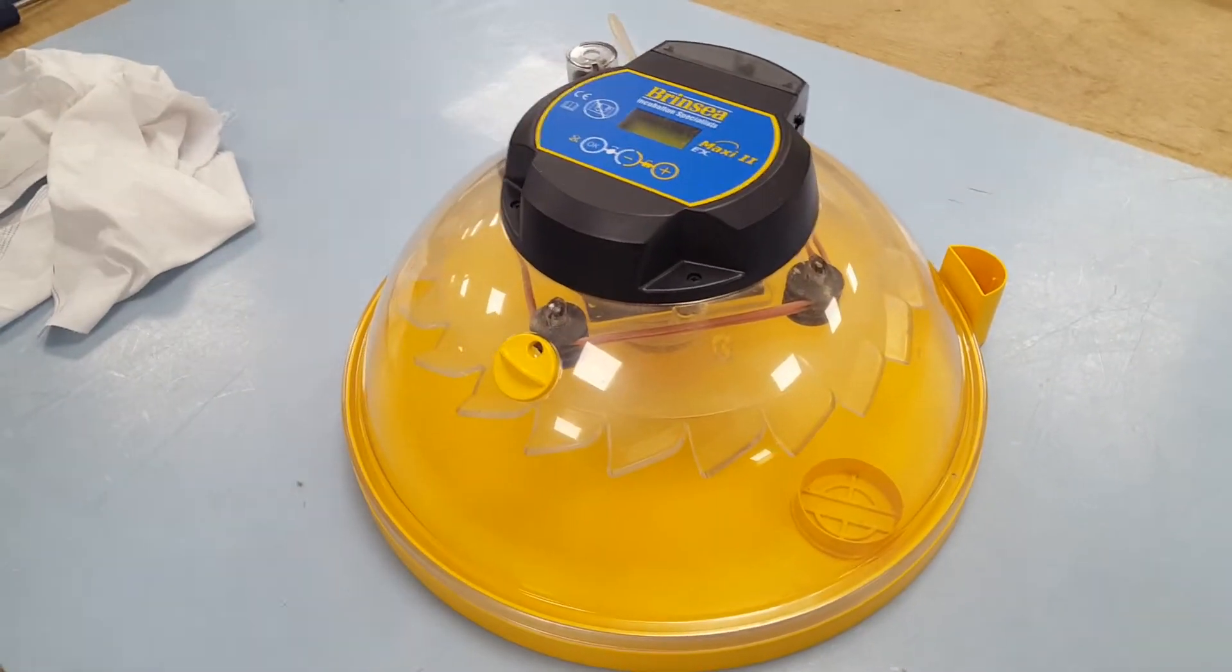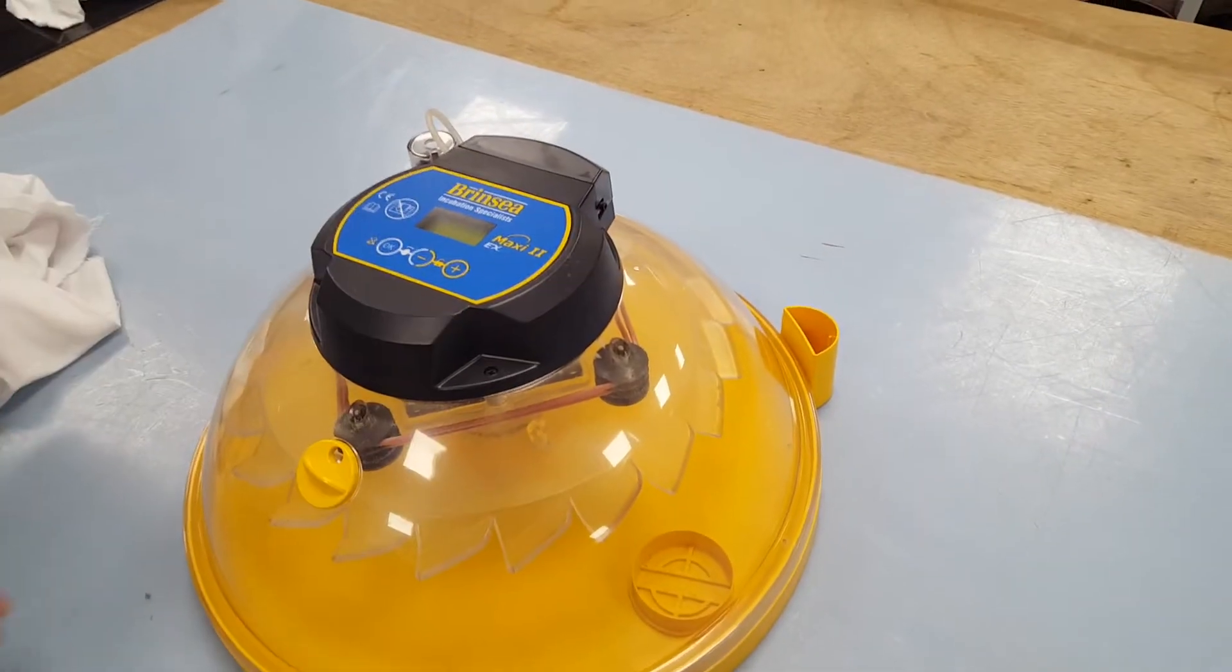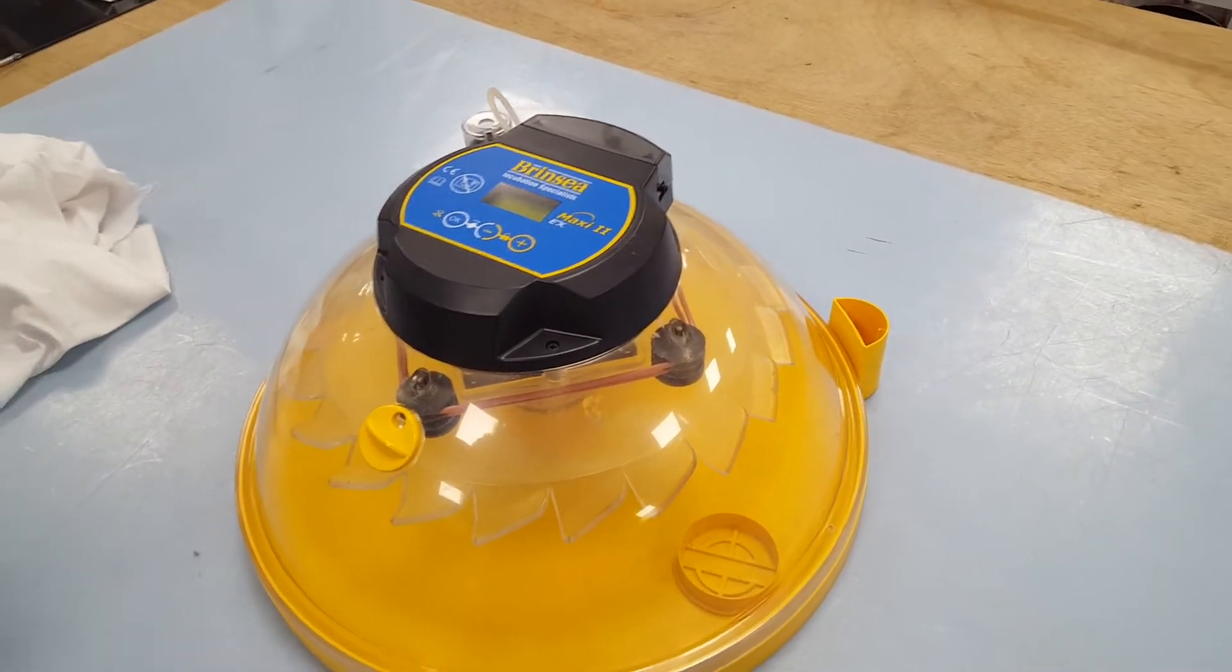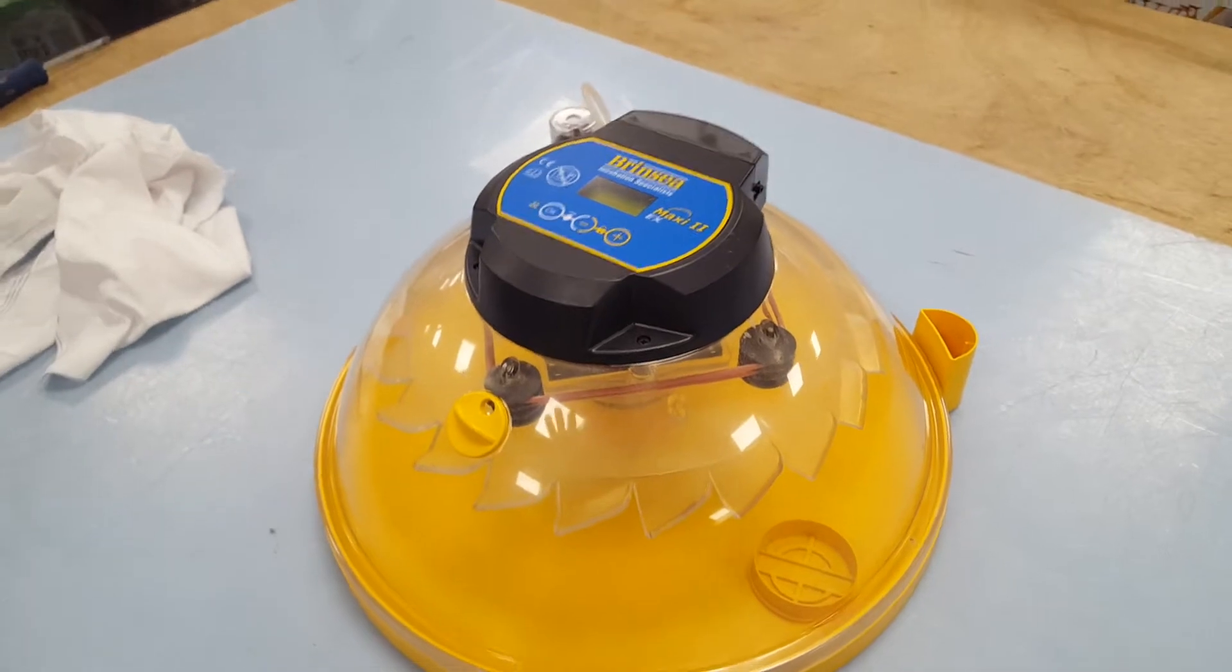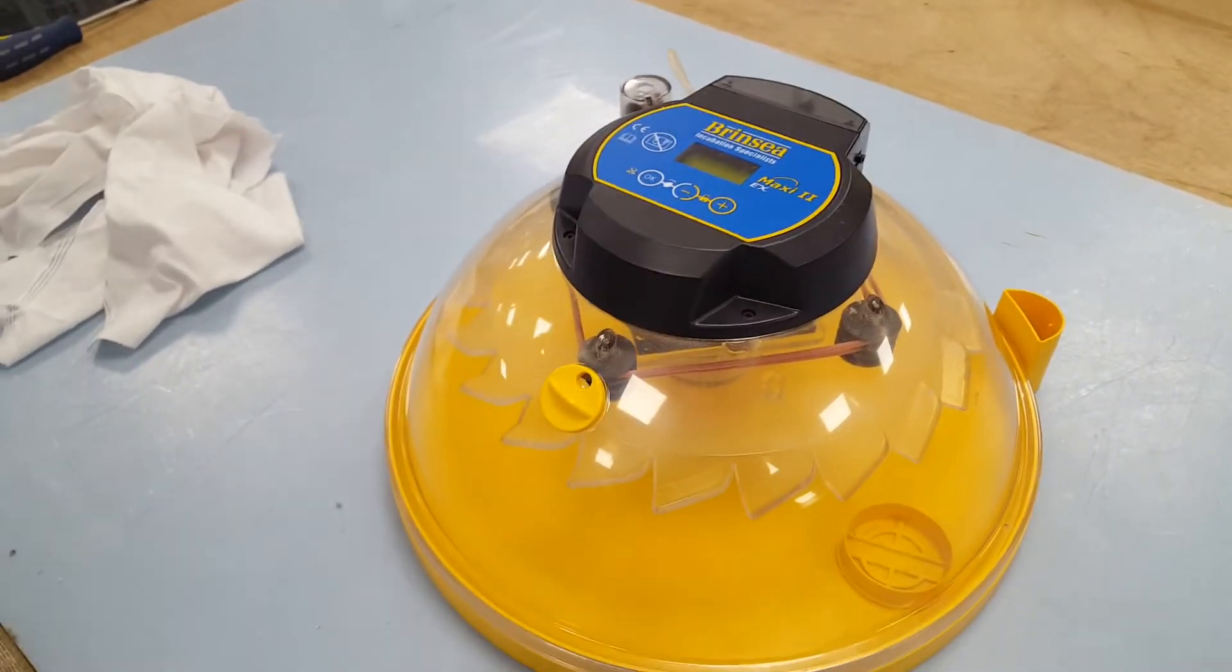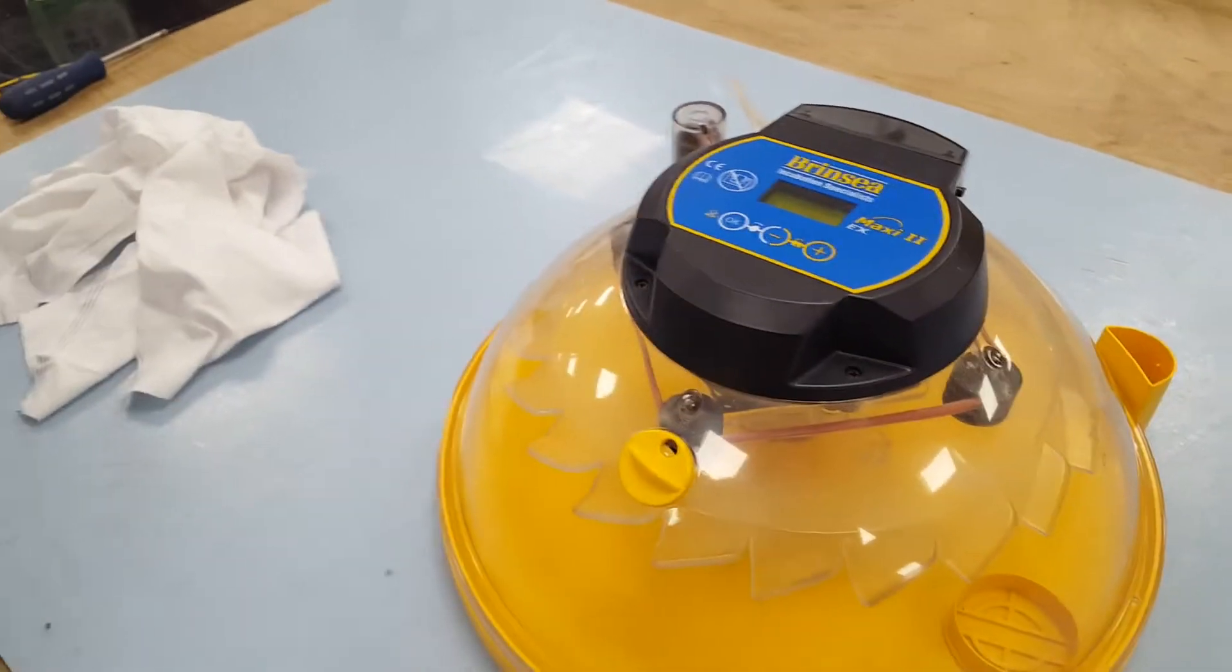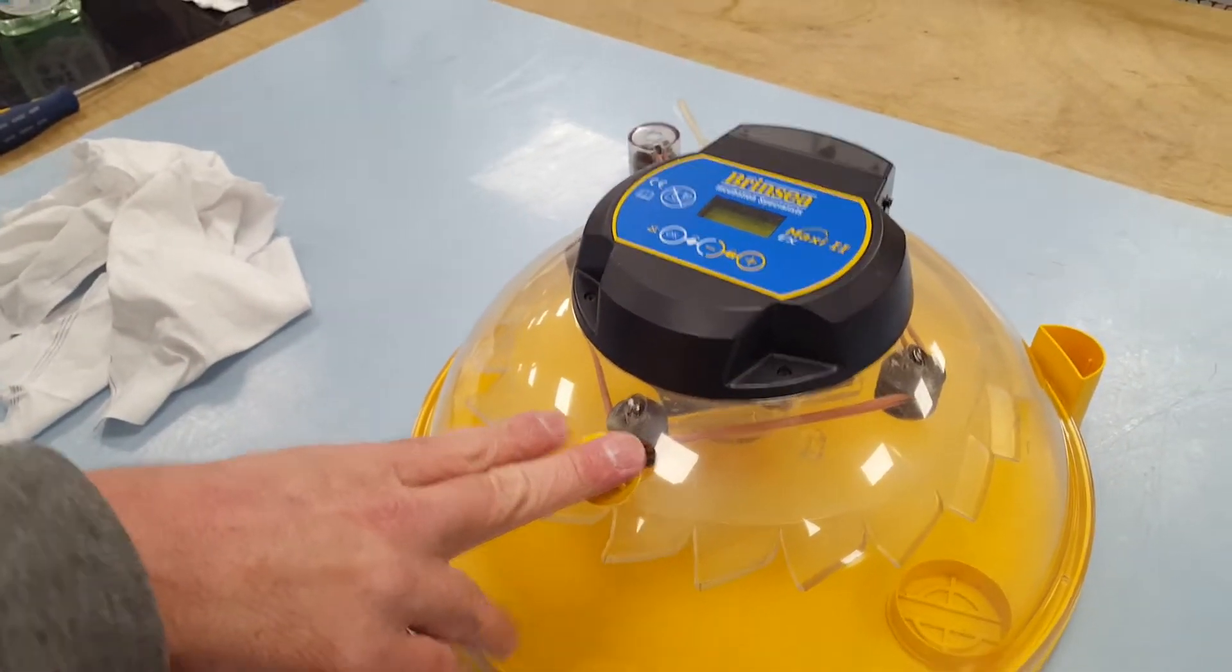So Tom, we've brought this down now to you in the technical department and we're going to look at getting this to a level of hygiene that's required for you to be able to work on it. We'll talk about that in a second, but also we'll look at changing the fan on it. There is some dust and things here in the lid.